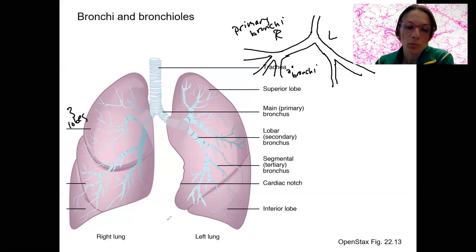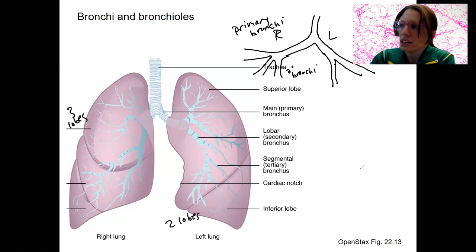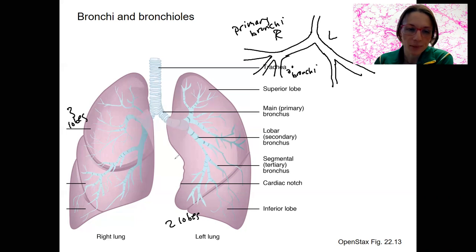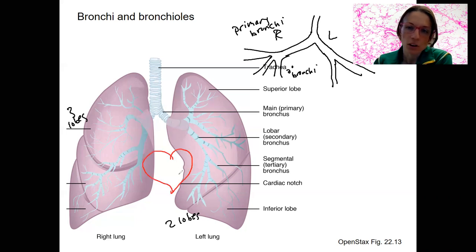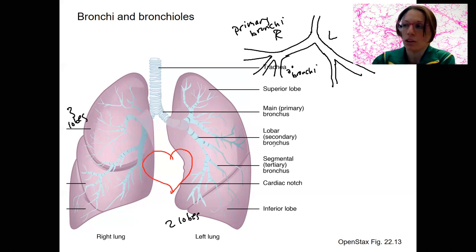There are three lobes on the right and two lobes on the left. Why are there only two lobes on the left? Well, what is in that little space right there? The heart. It's a little bit offset, closer to the left, so there are only two lobes on the left side of the lungs.